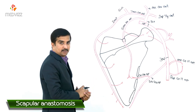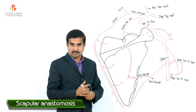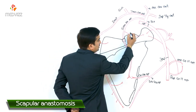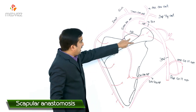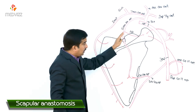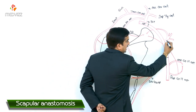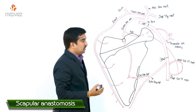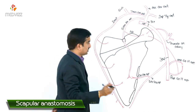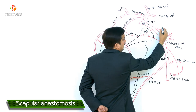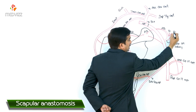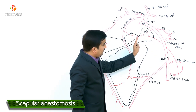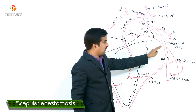This is how the scapular anastomosis is formed around the body of the scapula. The scapular anastomosis along the acromion process is mainly formed by acromial branches from individual arteries. For example, there is an acromial branch of the suprascapular artery, and an acromial branch of the thoracoacromial artery. The thoracoacromial artery arises from the second part of the axillary artery and gives off four branches: the acromial branch, the deltoid branch, the pectoral branch, and the clavicular branch.